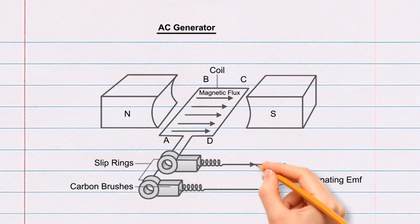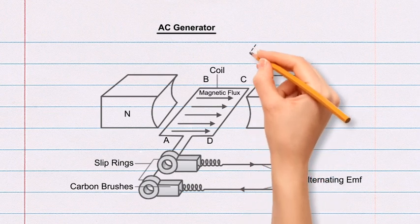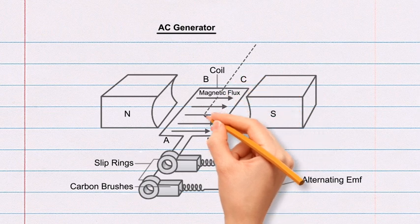Draw an arrow rightwards on the first horizontal line of alternating EMF which is below the south pole. Similarly, draw an arrow leftwards on the second horizontal line.